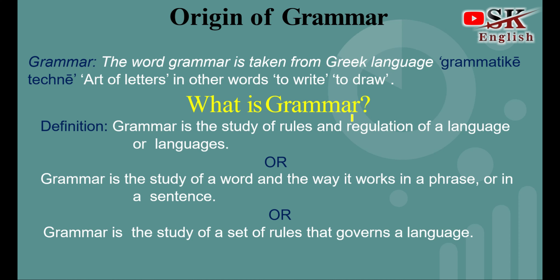Now the question is, what is grammar? So let's jump into the definition first. Grammar is the study of rules and regulation of a language or languages. Grammar جو ہے یہ set of rules and regulation ہے — کسی ایک language کی یا بہت سارے languages کی۔ Right now we are just dealing with English grammar، ابھی ہم صرف English کی set of rules and regulation کو دیکھیں گے۔ Our next definition is: grammar is the study of a word and the way it works in a phrase or in a sentence۔ Grammar میں ہم study کرتے ہیں کسی ایک word کی، کس طرح اس سے phrase بنتا ہے اور کس طرح phrases sentences میں convert ہو کے meaningful بن جاتے ہیں۔